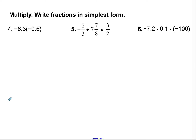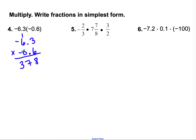Here are three more practice problems. For problem 4, negative 6 and 3 tenths times negative 6 tenths: line up the last digits. 6 times 3 is 18; 6 times 6 is 36, plus 1 is 37. I don't need to multiply by the leading 0. Same signs, so the answer is positive. 1, 2 decimals in the problem; 1, 2 decimals in the answer. My answer is 3 and 78 hundredths.